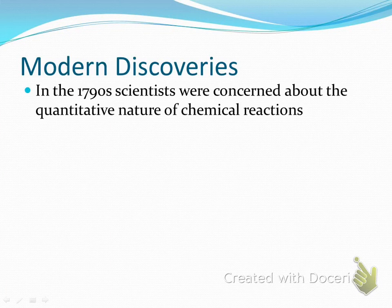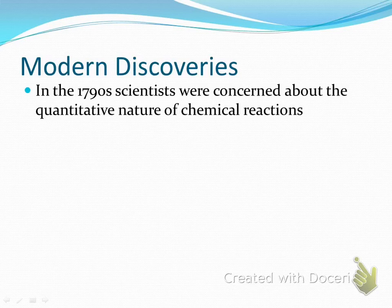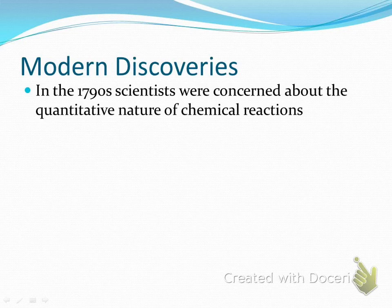So until this point in our chemistry world, scientific discoveries were really about finding what was out there — discovering the elements themselves and figuring out what there was that we could study. So in the 1790s, they started becoming concerned with what we consider the quantitative nature of reactions, which means we're looking at what quantities go into chemical reactions and what quantities come out. They wanted to start putting numbers to chemical reactions. So they weren't just putting together and seeing what came out — now they want to start putting numbers with them.